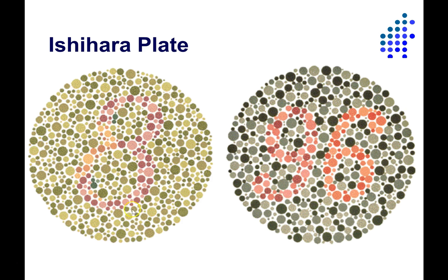Most people can perceive a number eight right here. Some people don't perceive this part, but do perceive the three. So you could either see a three or an eight or possibly nothing at all, depending on what type of color vision deficiency you might have. Over here, most people perceive a nine and a six. Some people perceive either the nine or the six or nothing at all, depending on what form of color vision deficiency they have.